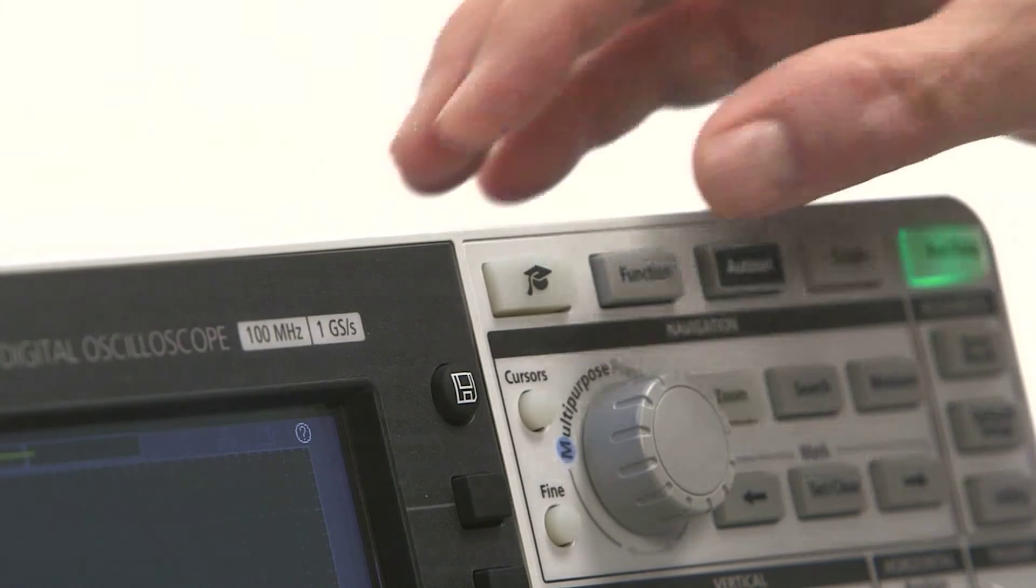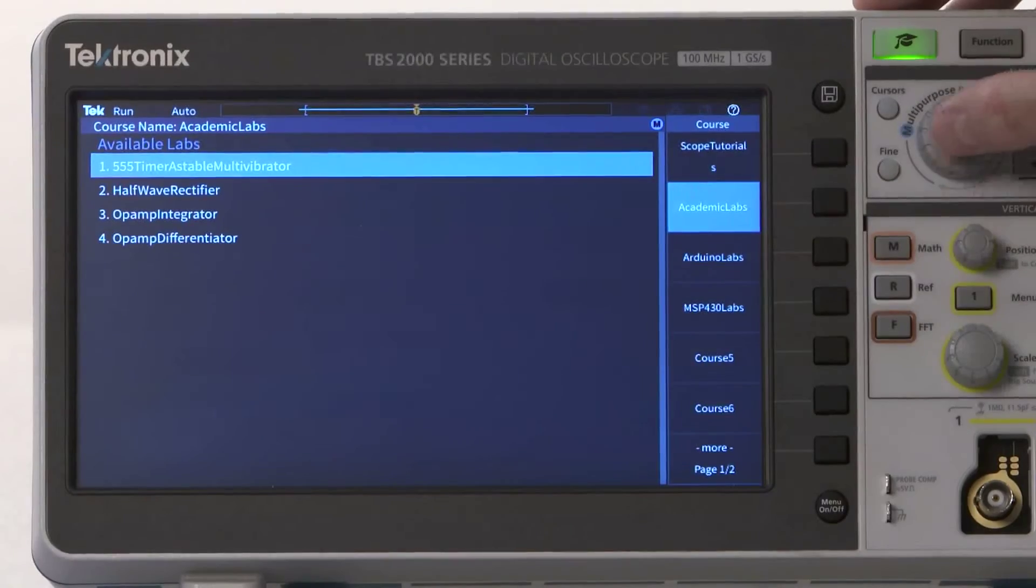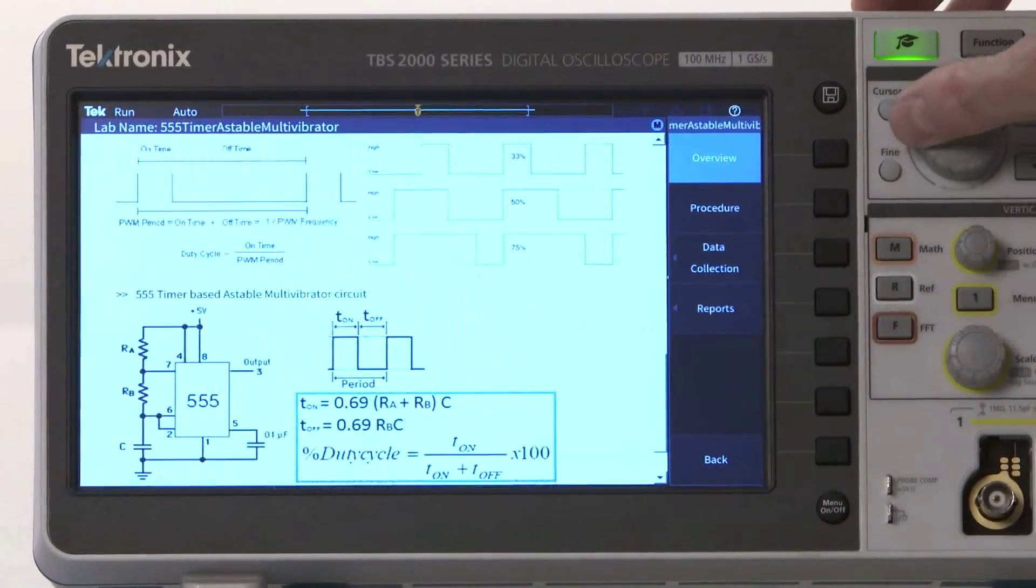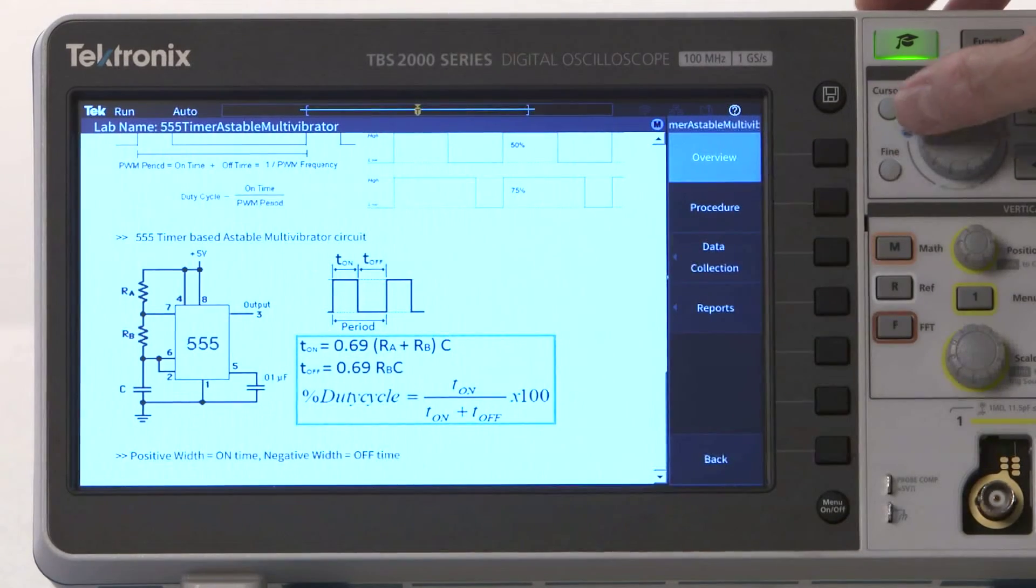The courseware function gives students access to lab instructions right on the scope. The scope's display can provide a range of information, from tips on making connections to step-by-step instructions.